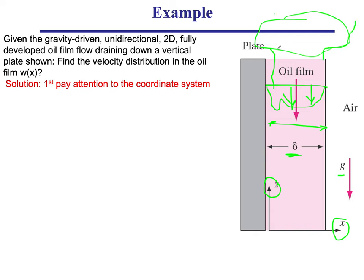The flow takes a while before it becomes fully developed. There is a developing region near the splash where the flow is not unidirectional or two-dimensional — it's three-dimensional and still developing. Beyond a certain point, the oil film becomes constant thickness and fully developed, becoming unidirectional. But in the development region where you splash oil against the wall, the flow is not two-dimensional. Once out of the development region, the oil seeps down in a steady fashion.